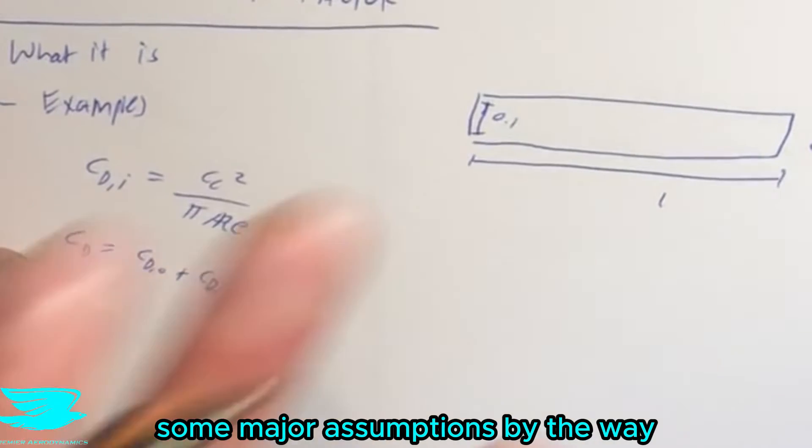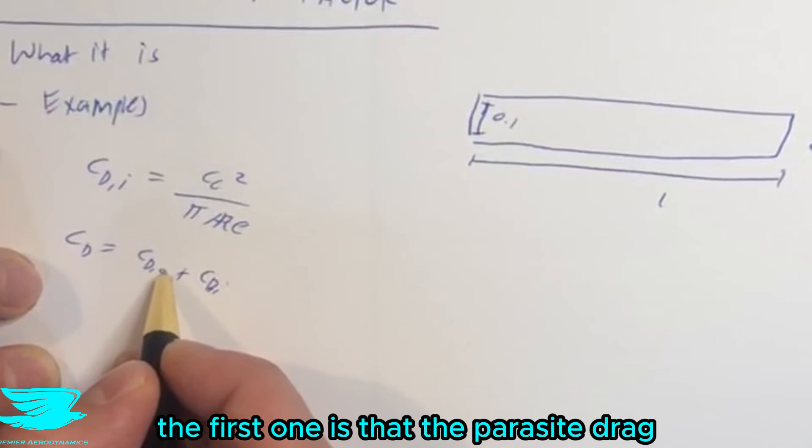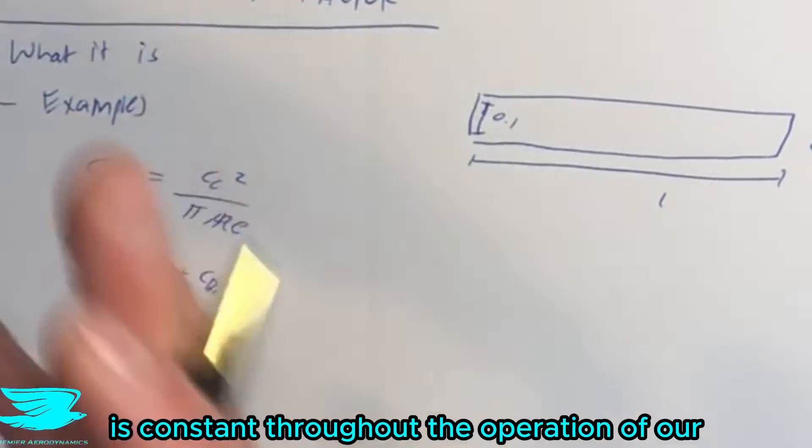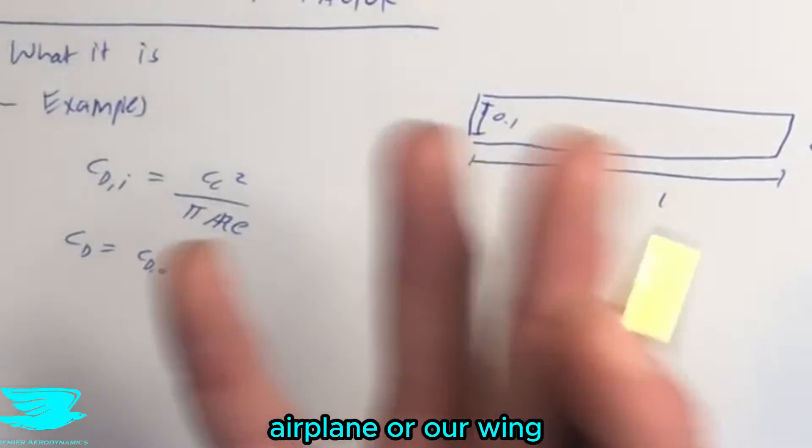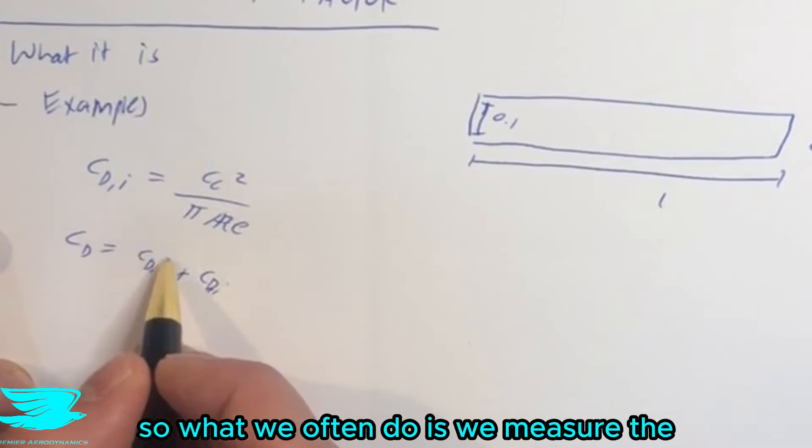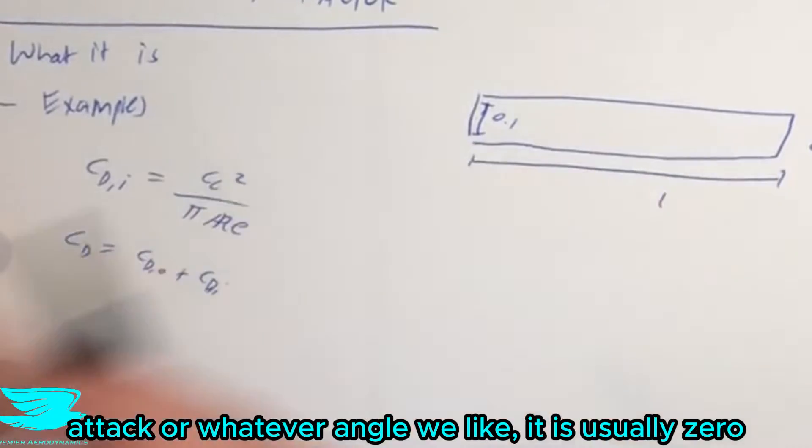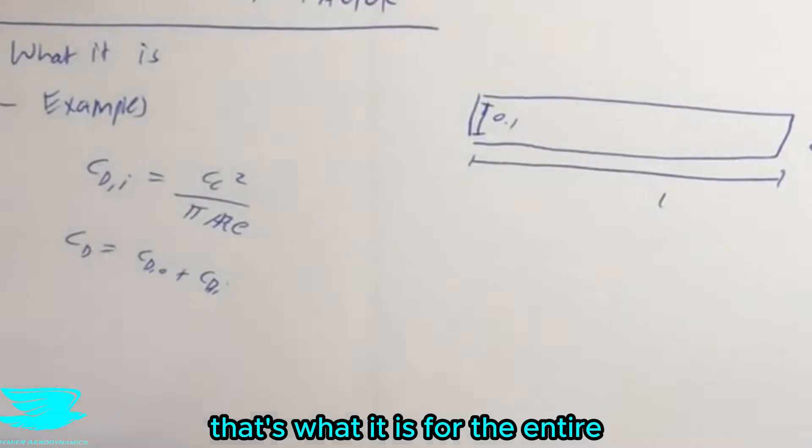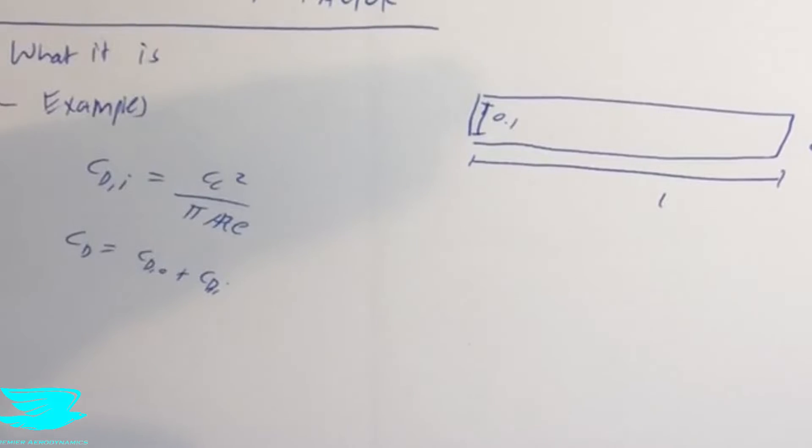Now, this is predicated on a couple of assumptions, some major assumptions, by the way. The first one is that the parasite drag is constant throughout the operation of our airplane or our wing. That is not entirely the case. So what we often do is we measure the parasite drag at a zero degree angle of attack, or whatever angle of attack we like, it's usually zero. And then we say, okay, that's what it is for the entire operation.